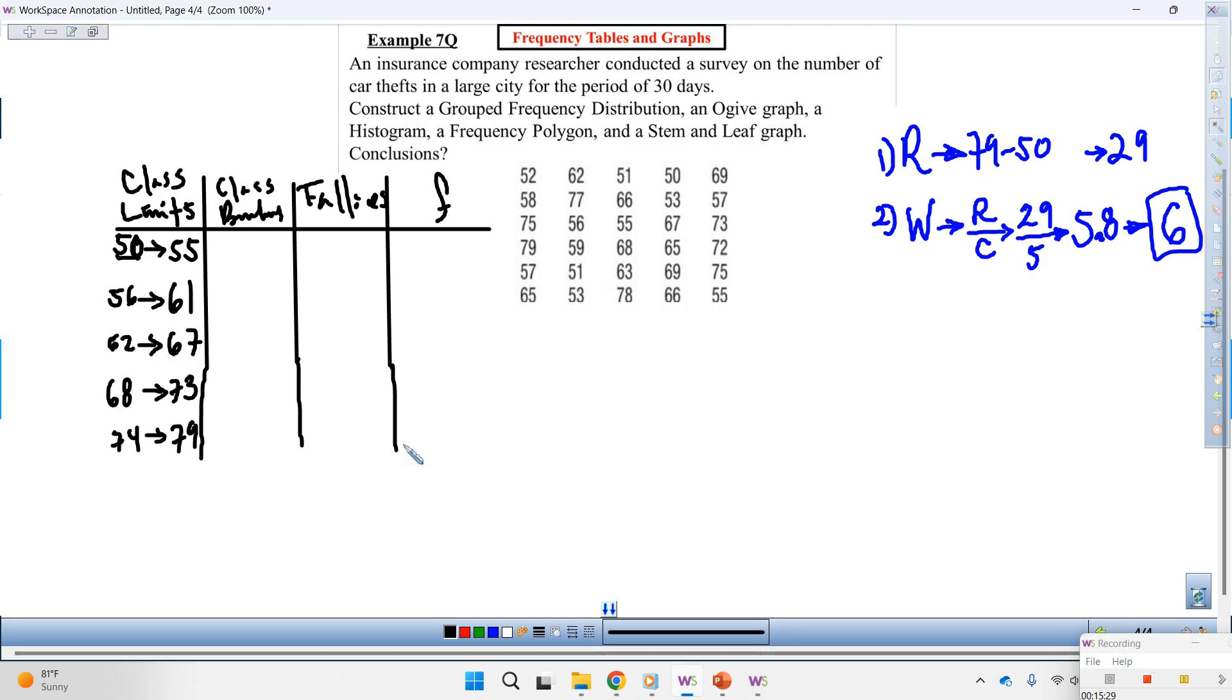All right. So far, so good. Write your boundaries. And, while you're writing your boundaries, I'm going to get you started with the tallies first, and then my frequency. I'm going to start with red for the first class. From 50 to 55. Let's see. 50 to 55. We got one, two, three, four, five, six, seven, eight.